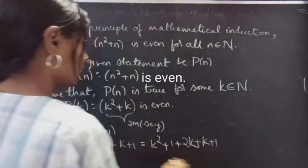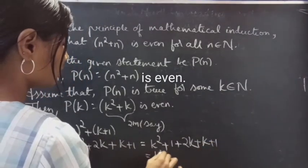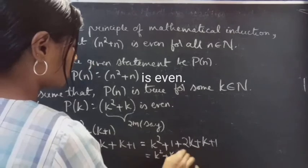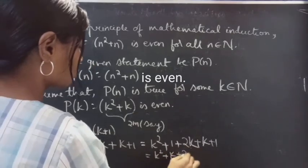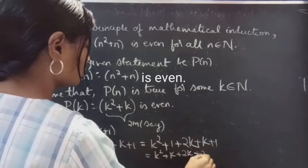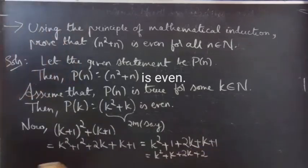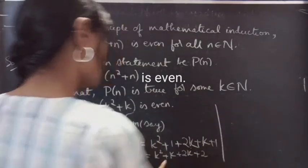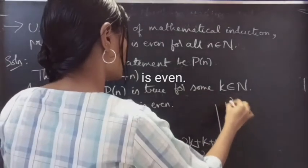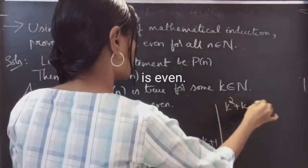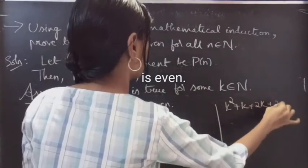This simplifies to k squared plus 1 plus 2k plus k plus 1. We can regroup this as k squared plus k, plus 2k plus 1 plus 1, which gives us k squared plus k plus 2k plus 2.